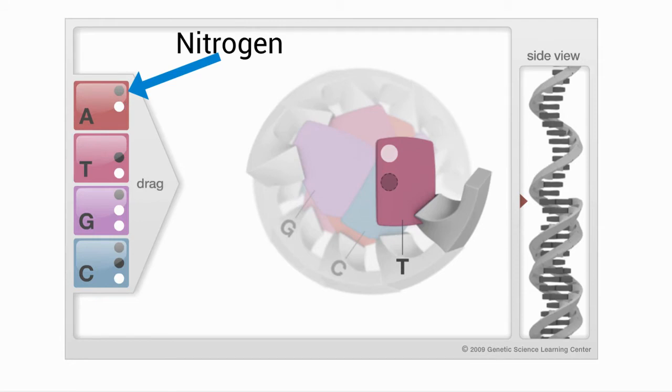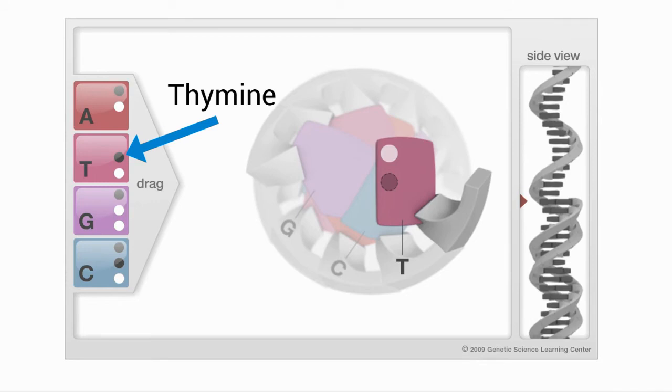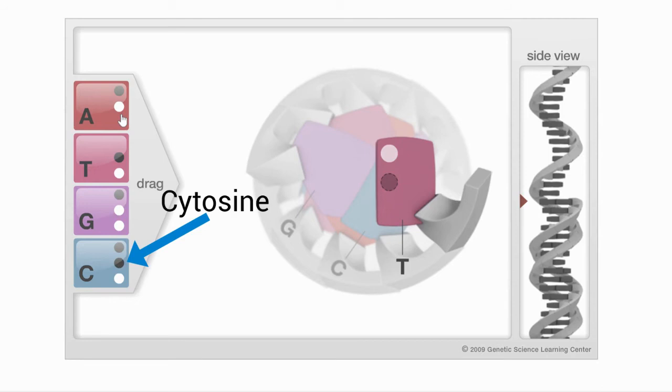In A, the dark circle is a nitrogen. In thymine, the dark circle is an oxygen. In guanine, the dark circle is an oxygen atom. And in cytosine, the two dark shaded circles represent one nitrogen and one oxygen atom. Both oxygen and nitrogen atoms have partial negative charges due to uneven sharing of electrons in the covalent bonds they form.